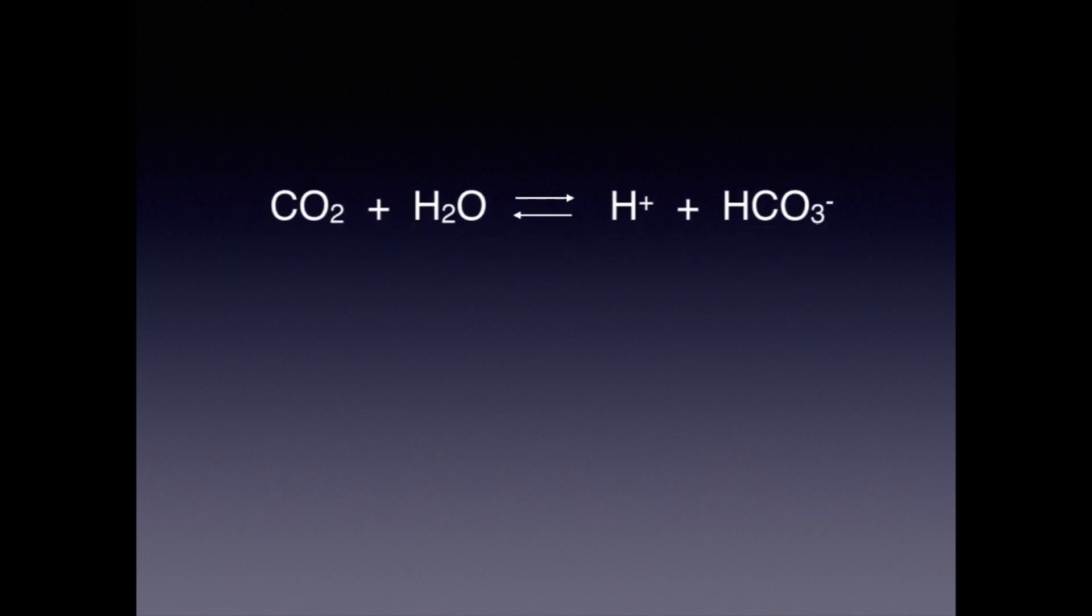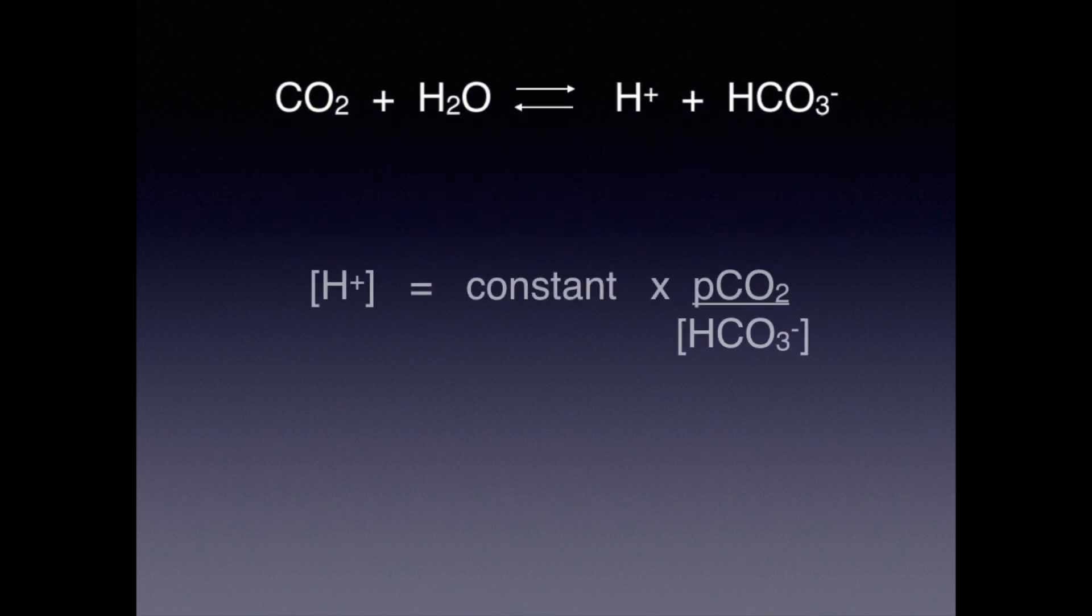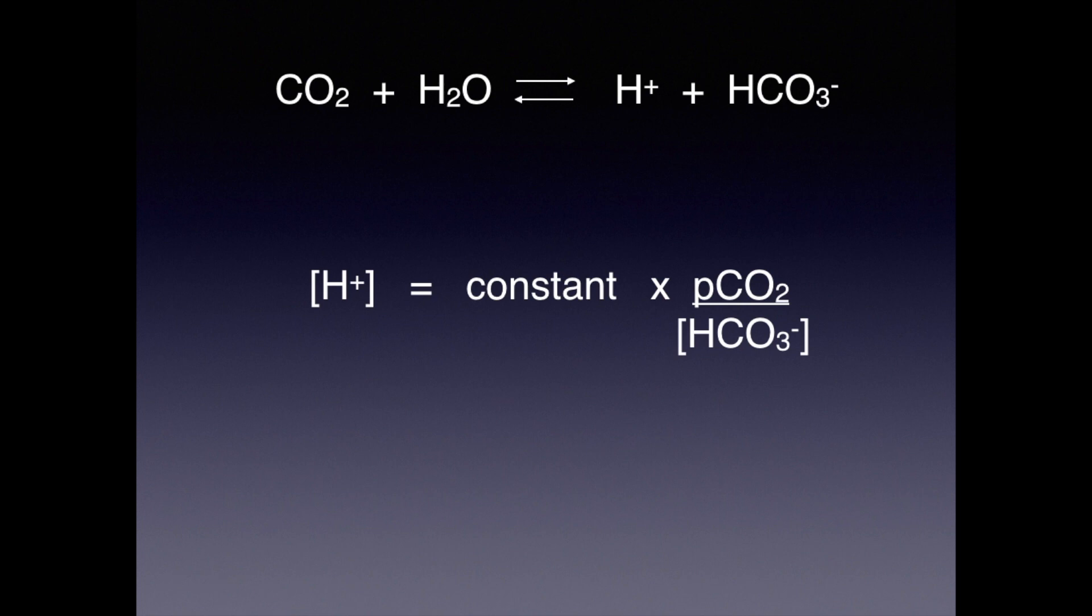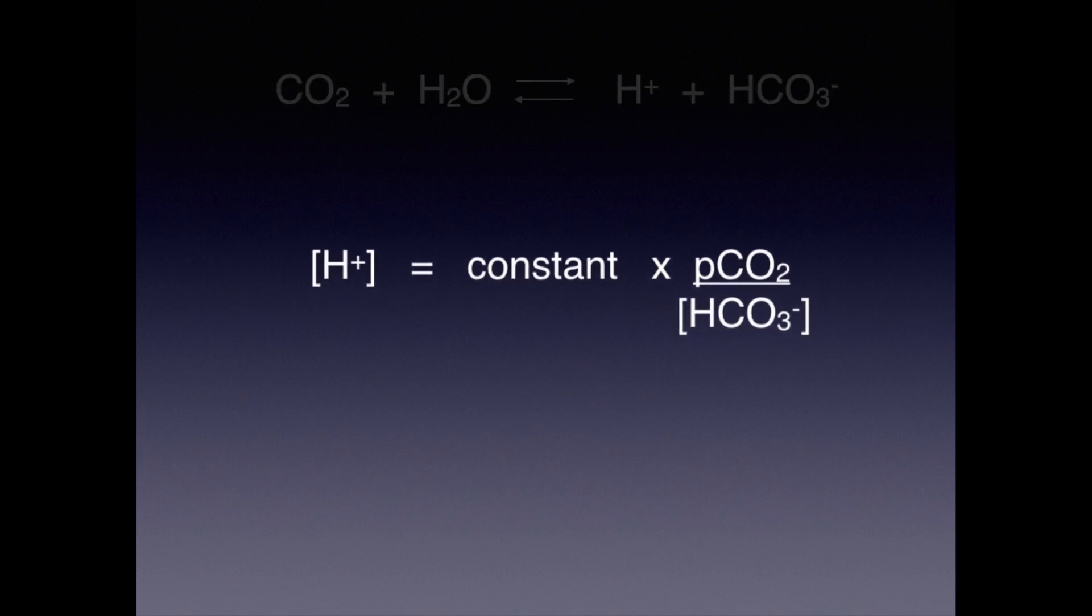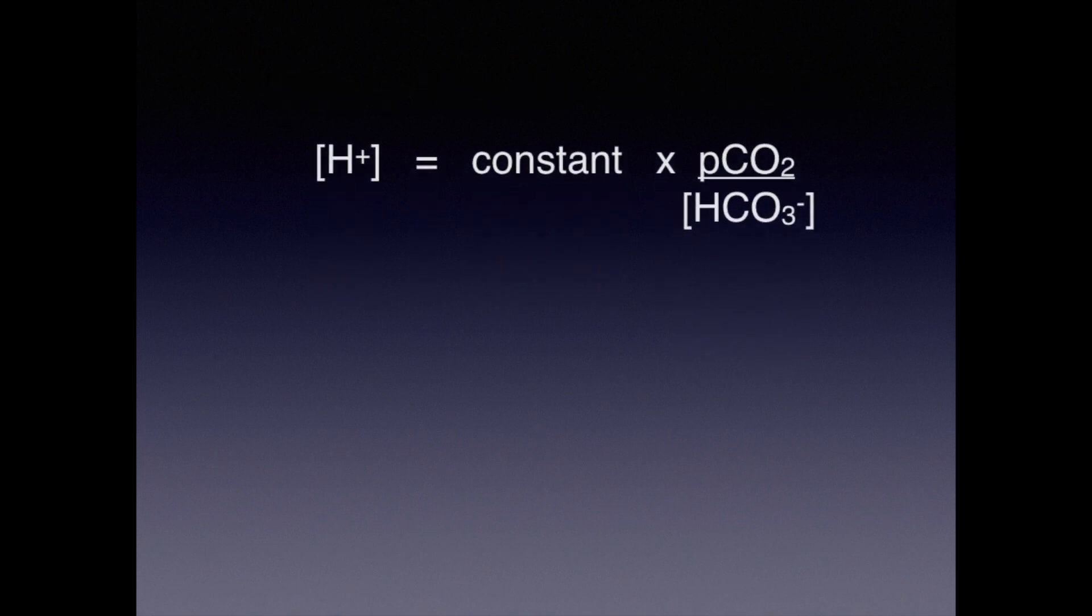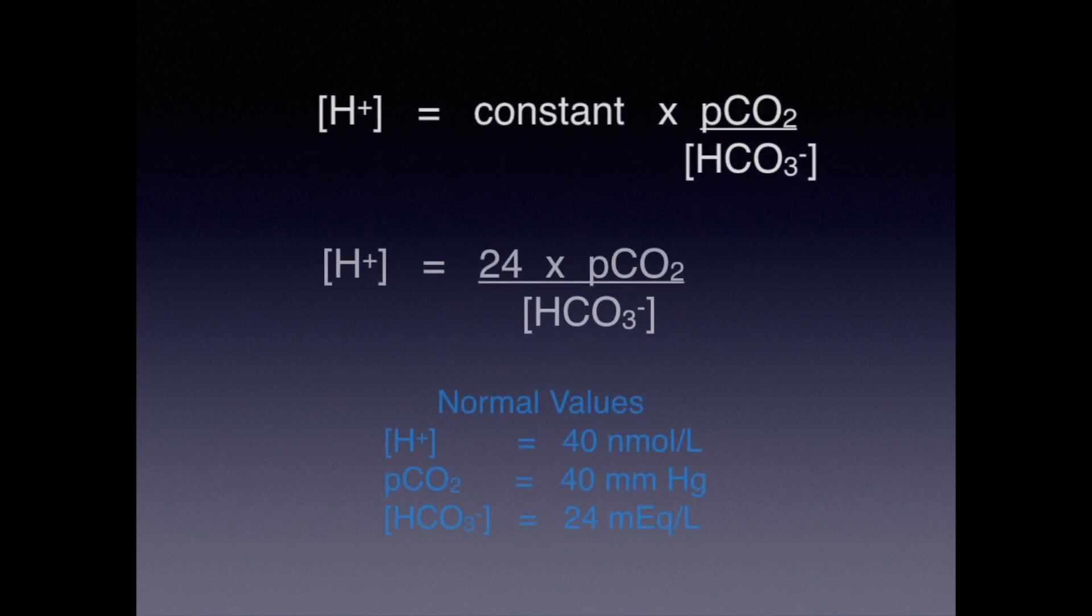From this chemical reaction and the Henderson-Hasselbalch equation, we can write that hydrogen ion concentration equals a constant times pCO2 divided by bicarbonate level. When hydrogen ion concentration is expressed in nanomoles per liter, pCO2 in millimeters of mercury, and serum bicarbonate levels in milliequivalents per liter, then at body temperature, this constant equals 24. We will ignore units of the constant, and this equation becomes hydrogen ion concentration equals 24 times pCO2 divided by serum bicarbonate level.